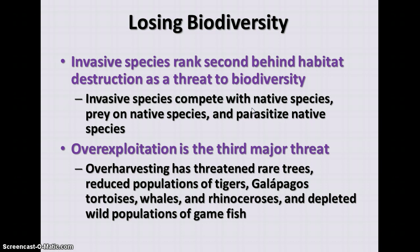A third major threat is over-exploitation — over-harvesting trees or killing particular animals for trophies can impact the ecosystem as a whole. For example, if the top-level predator in an area is a tiger and all tigers are killed, that leads to overpopulation of prey species. Those prey will reach and exceed their carrying capacity and then die off to a greater extent, changing the whole makeup of the ecosystem.